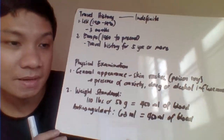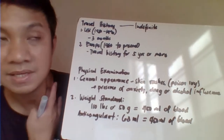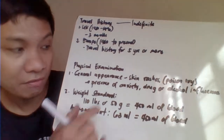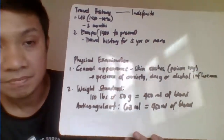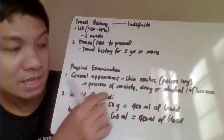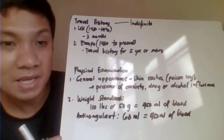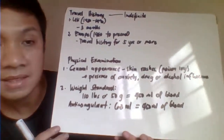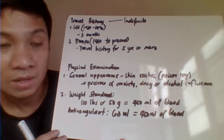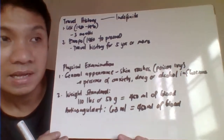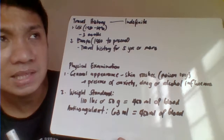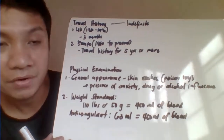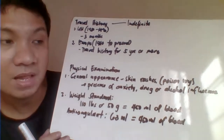Now for the physical examination: if you are the physician in the blood bank assessing the patient, you need to check for the presence of anxiety, drug use, or alcohol influence — anxiety may cause the patient to faint during blood collection. The weight requirement is at least 110 pounds or 50 kilograms in order to donate approximately 450 ml of blood.